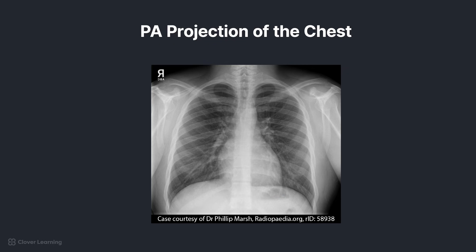Now let's count the ribs to make sure this image has sufficient inspiration. We always count the posterior ribs on the right side because the right hemidiaphragm is higher because of the liver. 1, 2, 3, 4, 5, 6, 7, 8, 9, 10 above the diaphragm, and you can see number 11 just below.